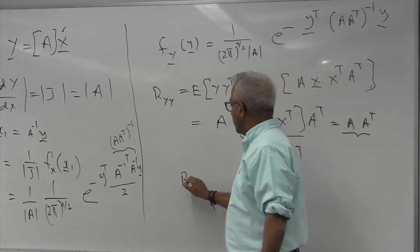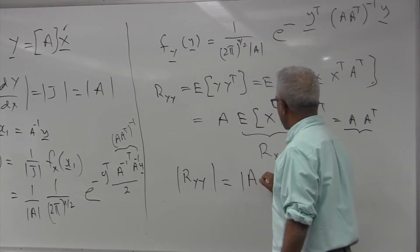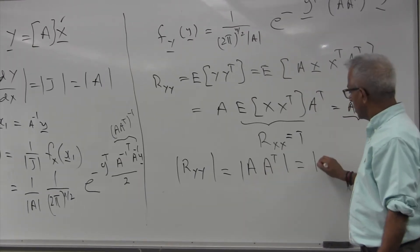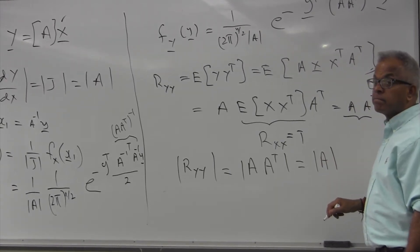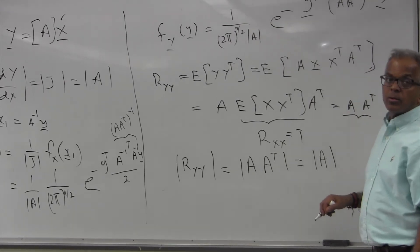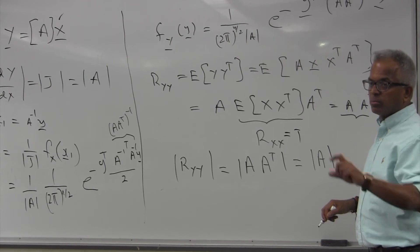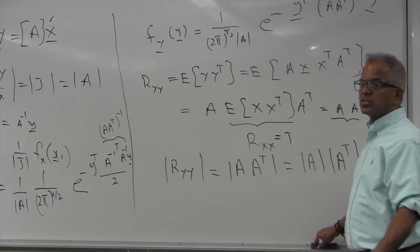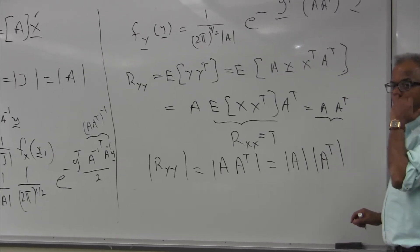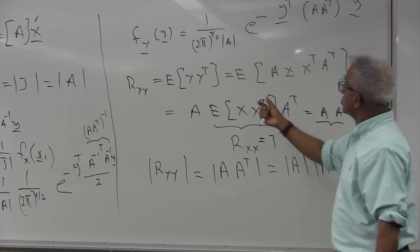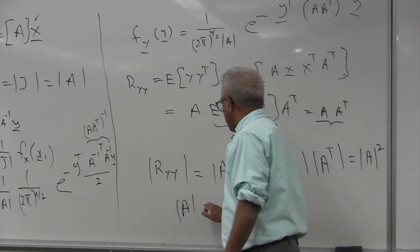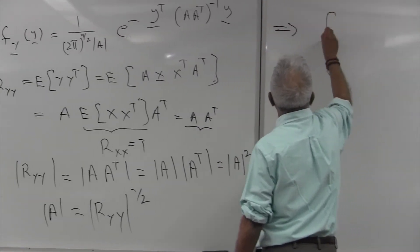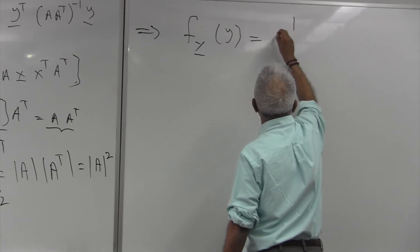Substituting back, the density function of a general Gaussian random vector y comes out to be (1/((2π)^{n/2} det(R_yy)^{1/2})) exp(−y^T R_yy^{-1} y / 2). This is the multivariate Gaussian density, where R_yy is the autocorrelation matrix of y.